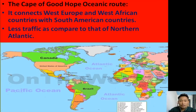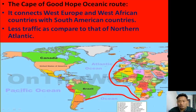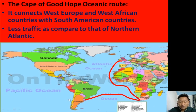The Cape of Good Hope oceanic route connects western European countries and western African countries, passing through Cape Town in South Africa, and also connects with South American countries. Compared to the North Atlantic Sea Route, this route has less traffic and fewer ship movements, as the North Atlantic Sea Route handles about 25 percent of international trade and is the busiest route.